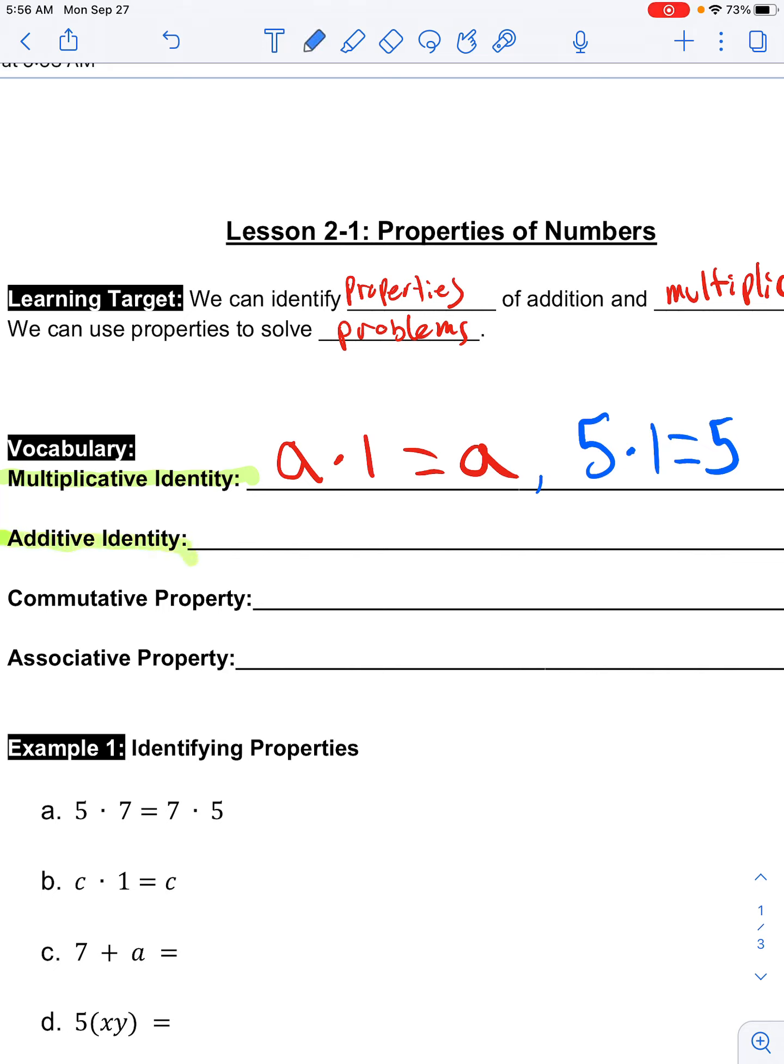It's similar with the additive identity, except it's not adding one, it's adding zero. So anything plus zero is going to equal our original amount. The multiplicative identity uses multiplication, we multiply by one. The additive identity uses adding zero to get the same number.